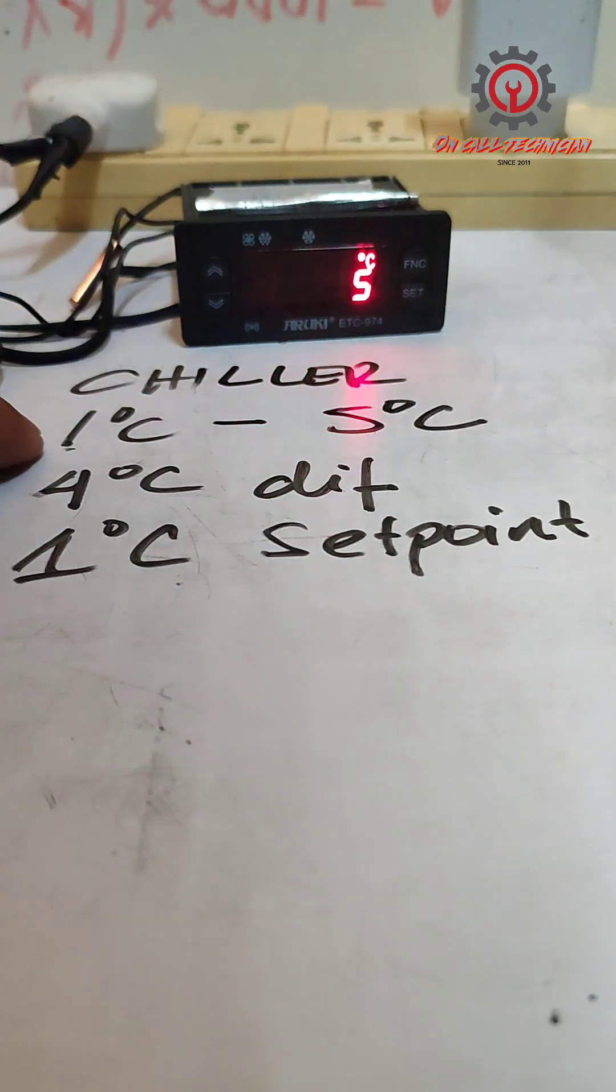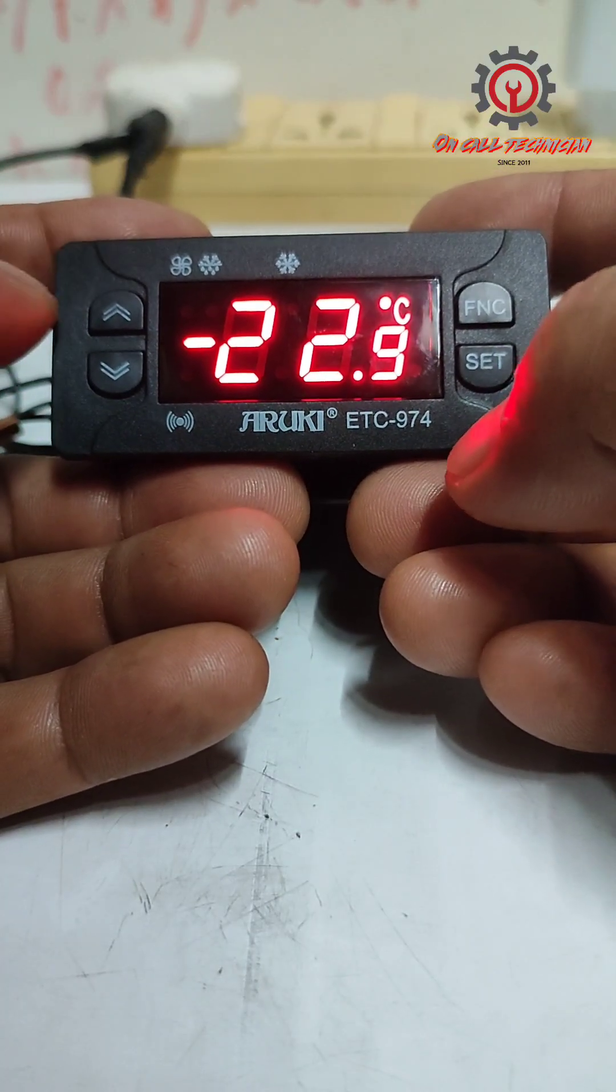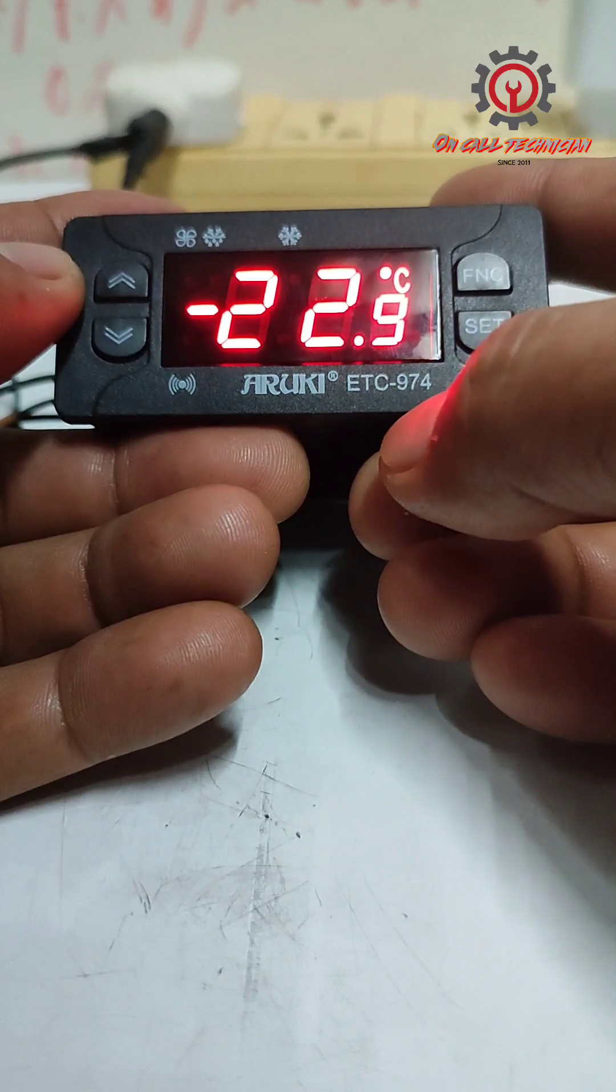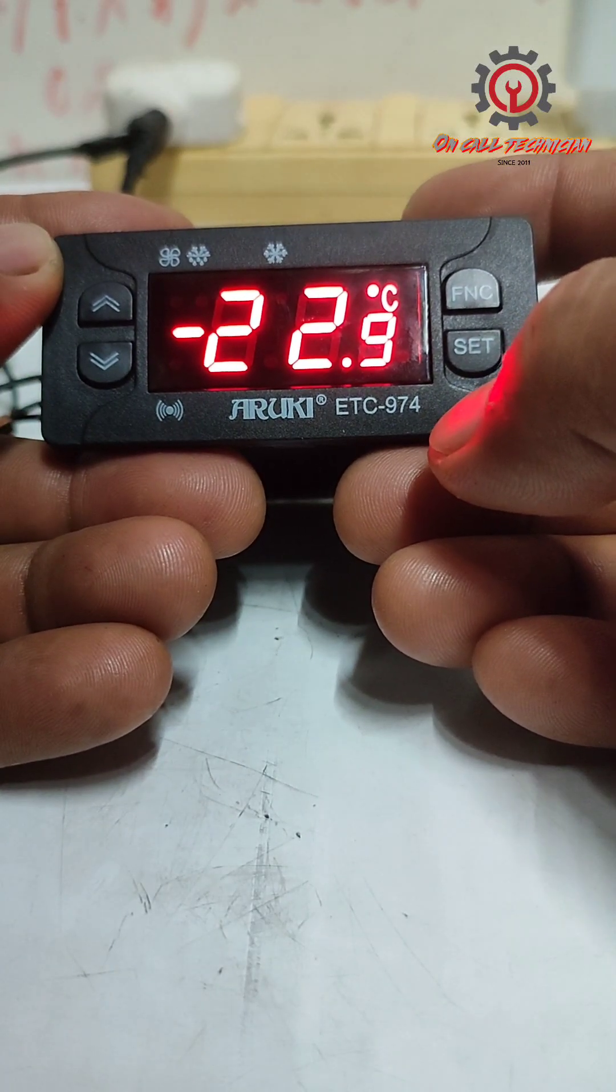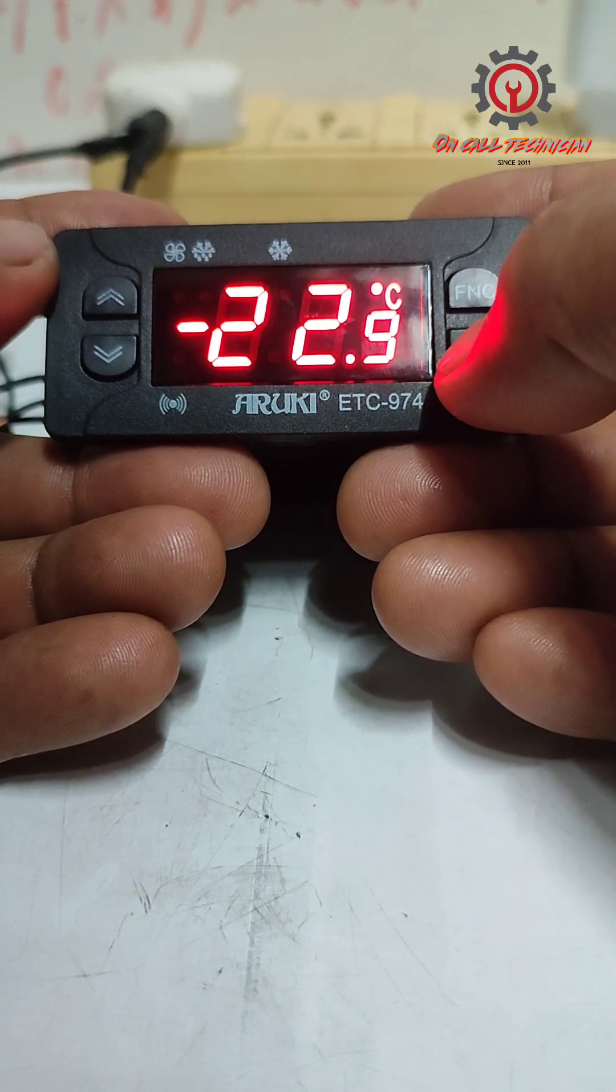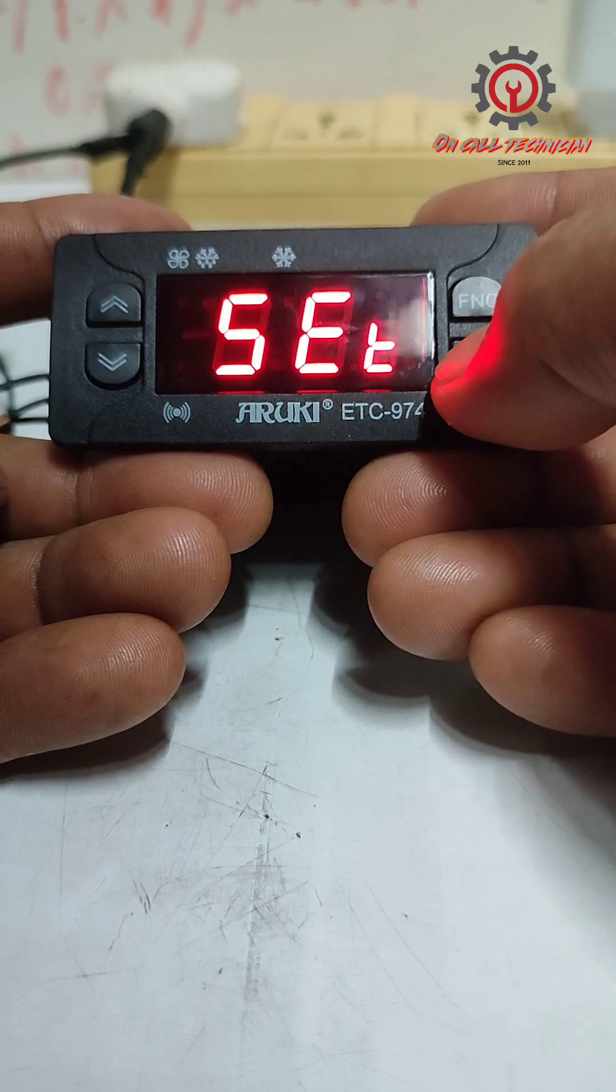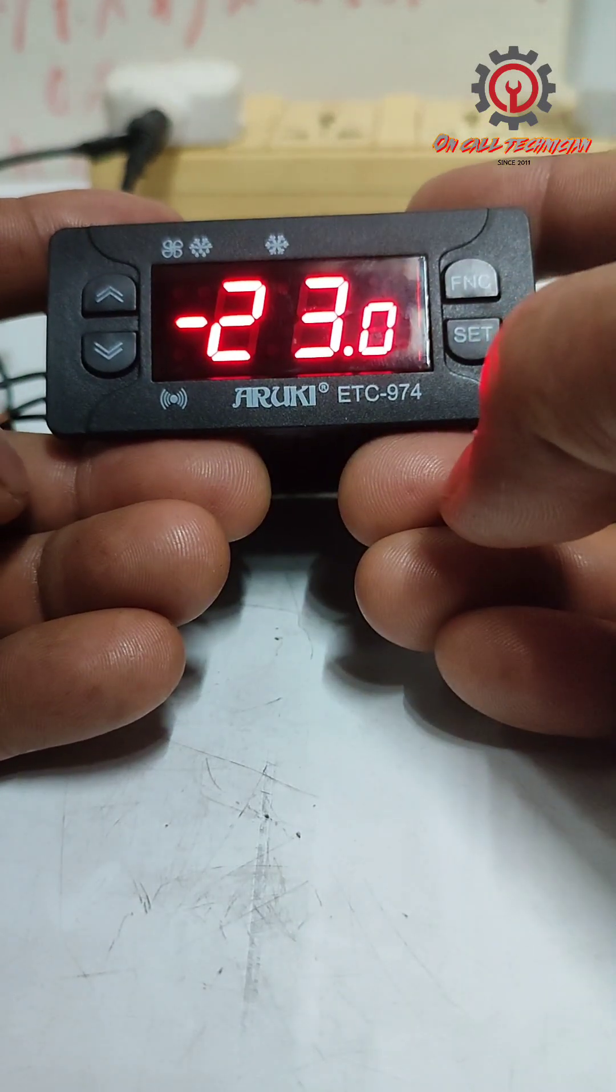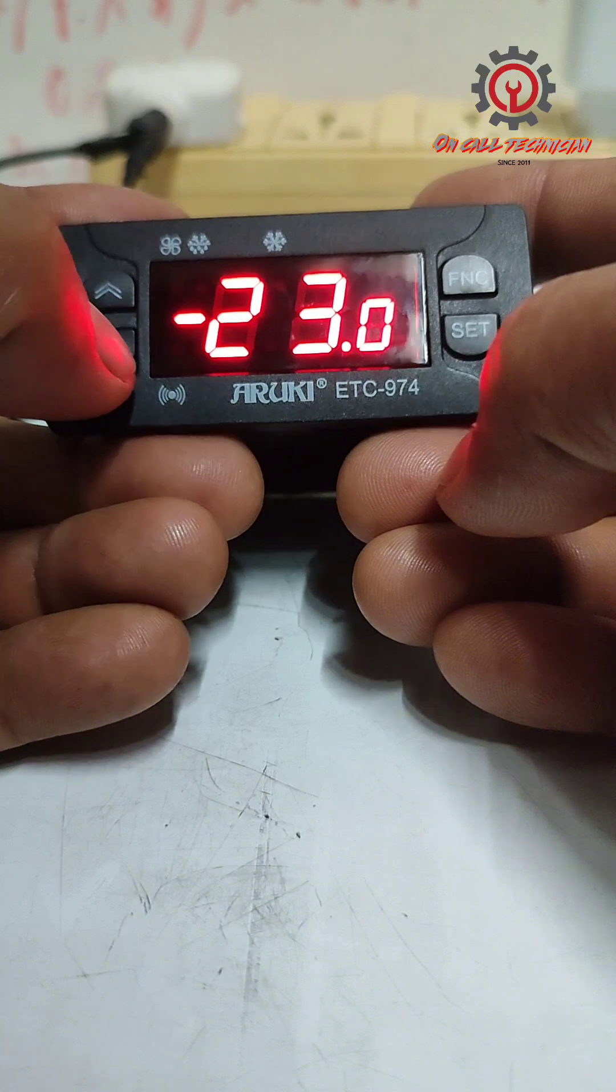There it is, it's off. How to change the set point of AROKI ETC-974 into chiller setting? To do that, just press the set button here, and then press set again. We're going to change negative 23 into positive one.